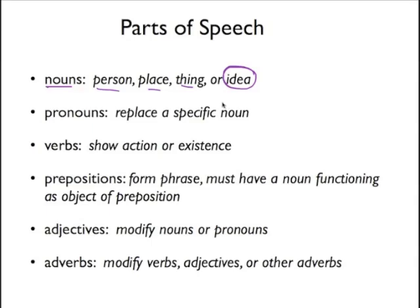Examples of the idea noun, the abstract noun, would be things like courage, happiness, love, justice — those kinds of concepts that you can't necessarily hold in your hand. Well, you can do that in a poem, but not in conventional unimaginative life.